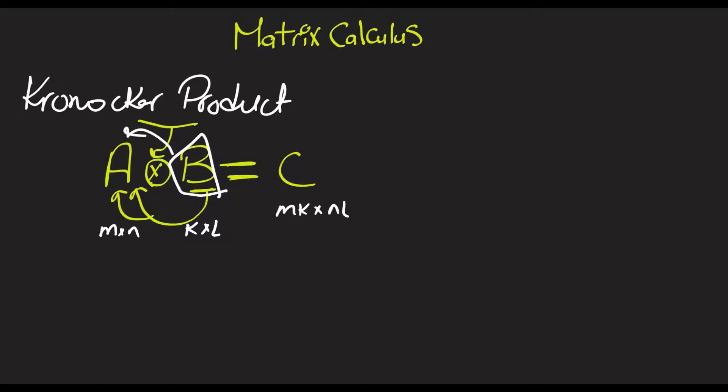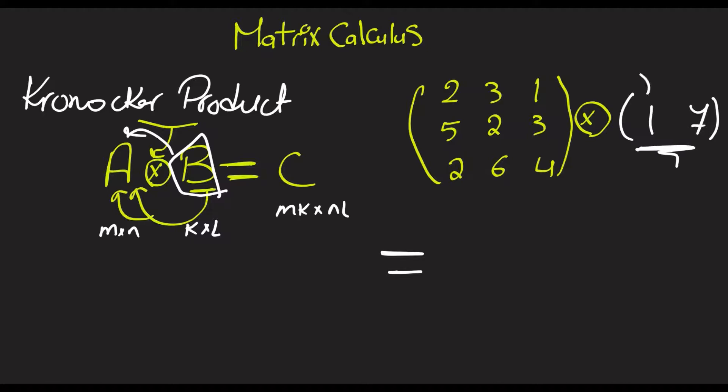Let us try a numerical example. Suppose we've got this matrix: 2, 3, 1; 5, 2, 3; 2, 6, 4. And we would like to do the Kronecker product with a row vector, maybe something like 1, 7. We're basically going to introduce this row vector into each element of this matrix.